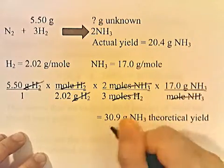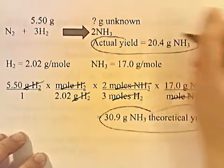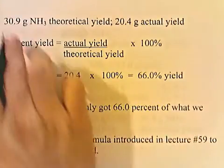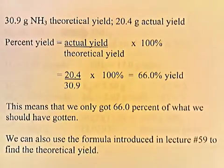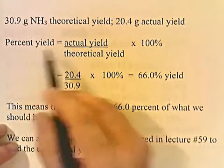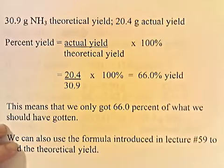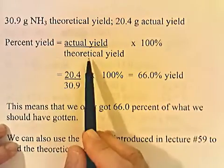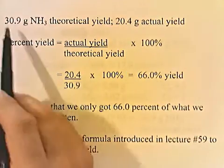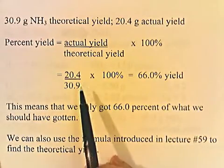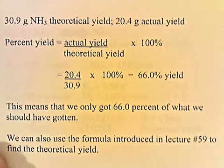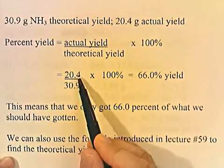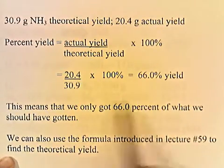Now we take the theoretical yield and the actual yield and compute the percent yield. Percent yield equals actual yield divided by theoretical yield. When someone actually did this experiment, they got 20.4 grams of NH3; they were supposed to get 30.9 grams of NH3. So 20.4 divided by 30.9 times 100 gives 66% yield. This means we only got 66% of what we should have gotten — we should have gotten 30.9 grams, but actually only got 20.4 grams.